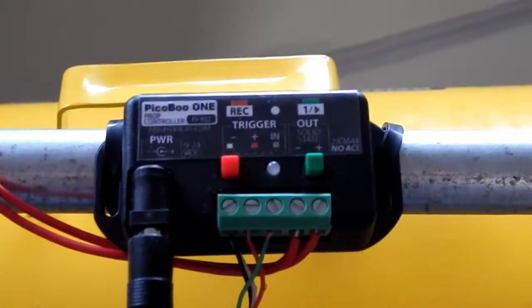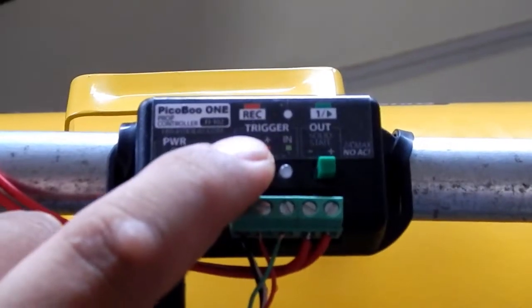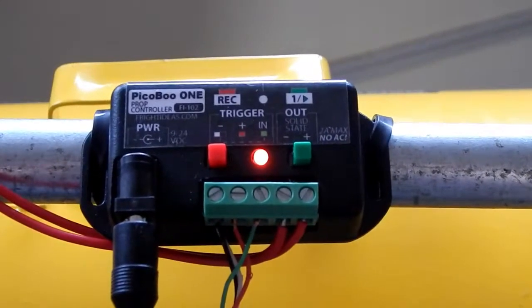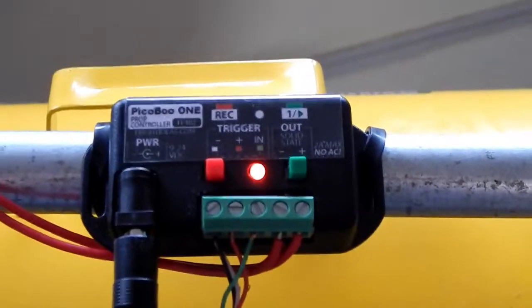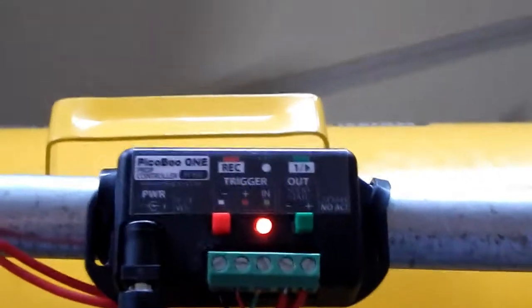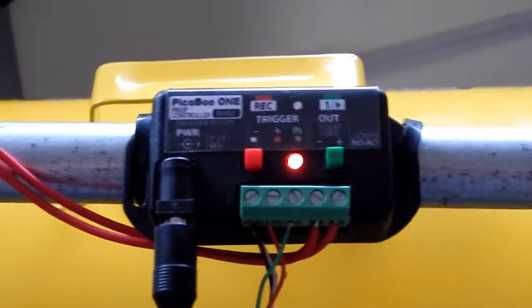We're going to press our red button, and as you see, the red light has turned on. That means the unit is in program mode. Now we're going to push the green button in the sequence that we want, and you'll hear the cannon actually go off.